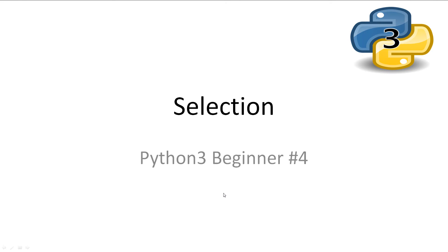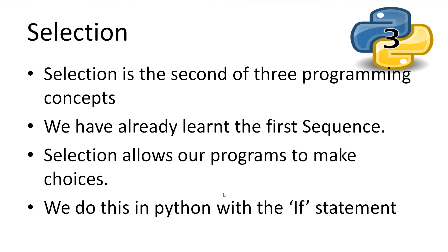Welcome to Python 3 Beginner 4 Selection. Every video will have all slideshows and code available in the description. Selection is the second main concept that makes up a program. We have already learnt the first, which is sequence. Sequence represents the program executing line after line.